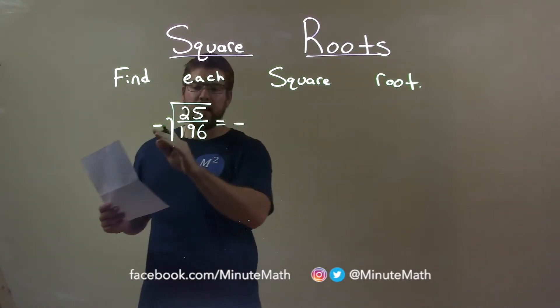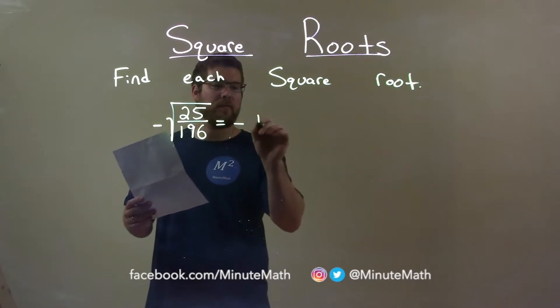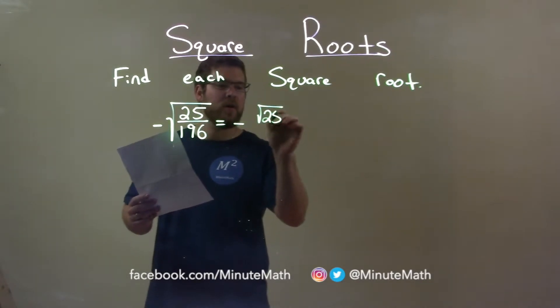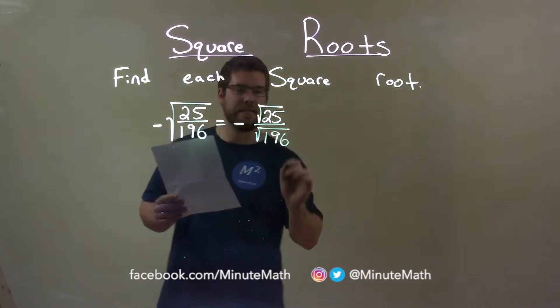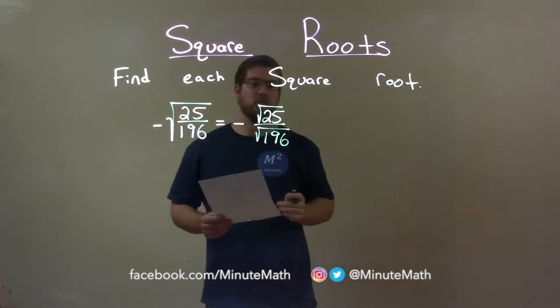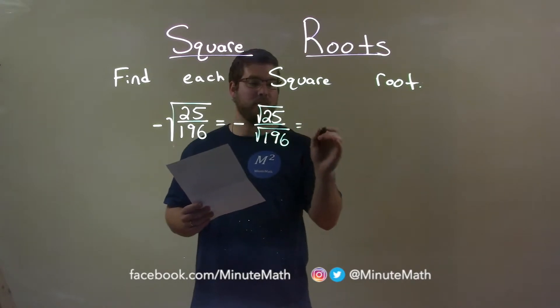So, keep the negative, bring it over, but now we have the square root of 25 over the square root of 196. So, first the square root of 25, the numerator.